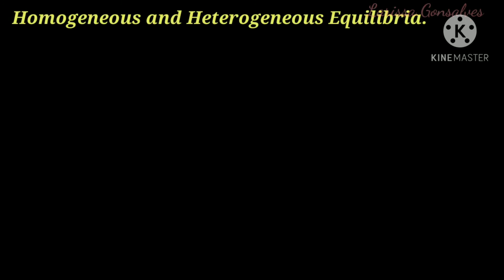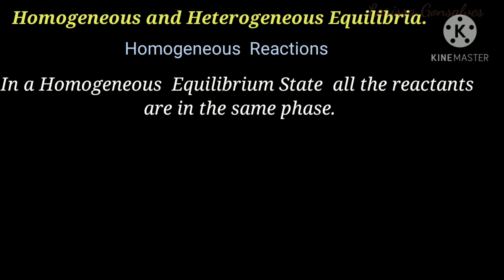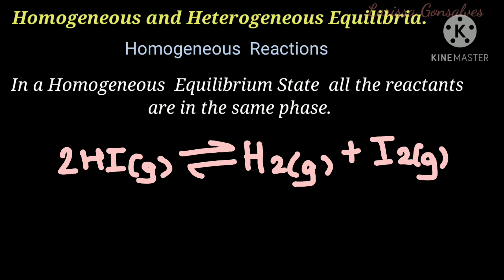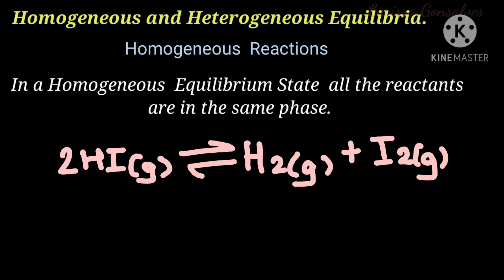Next topic is homogeneous and heterogeneous equilibria. The term 'homo' means one or same. Hence in a homogeneous equilibrium, all the reactants and products are in the same phase. For example, two molecules of hydrogen iodide in gaseous phase reversibly produce hydrogen gas and iodine gas. All reactants and products are in the gaseous phase, so it is a homogeneous reaction.